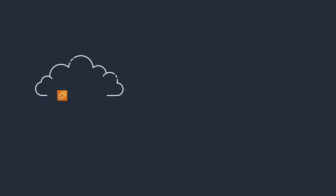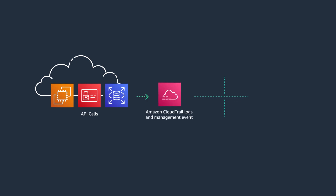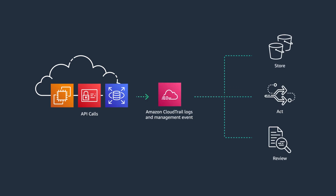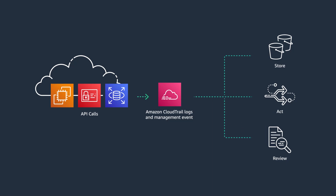To monitor your user and resource activity across your AWS infrastructure for governance and auditing, AWS CloudTrail can help. It can help to monitor and record account activity, and improve your security posture by understanding who is doing what and where in your AWS account.